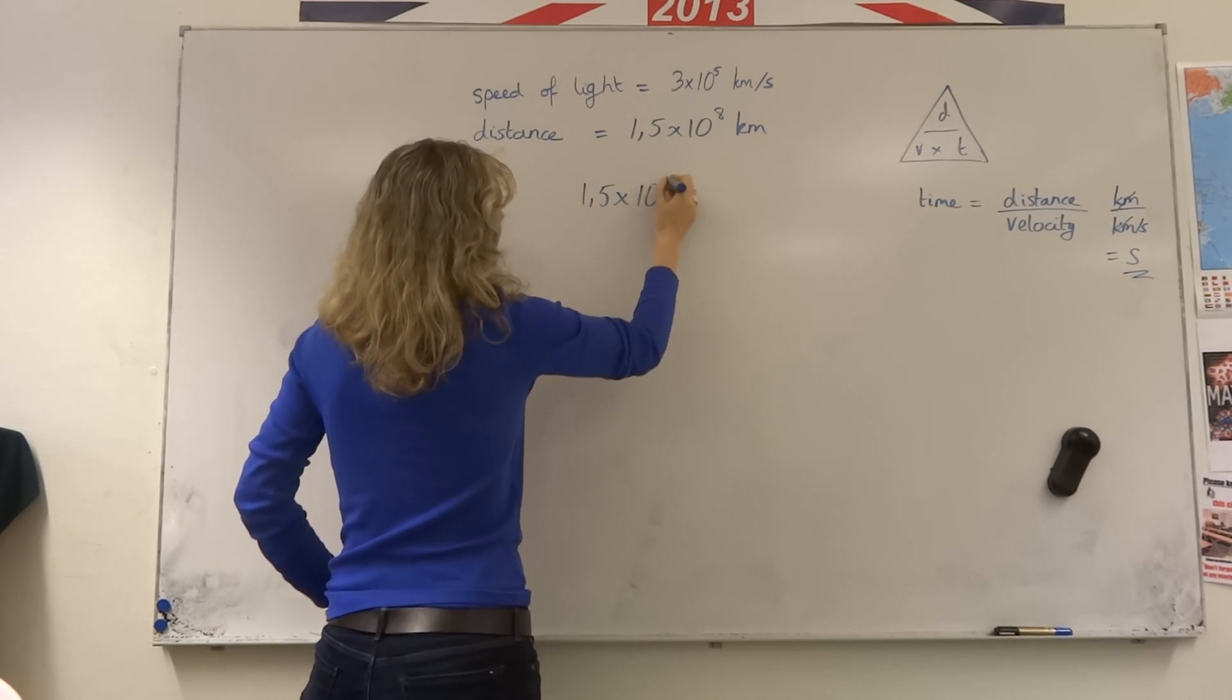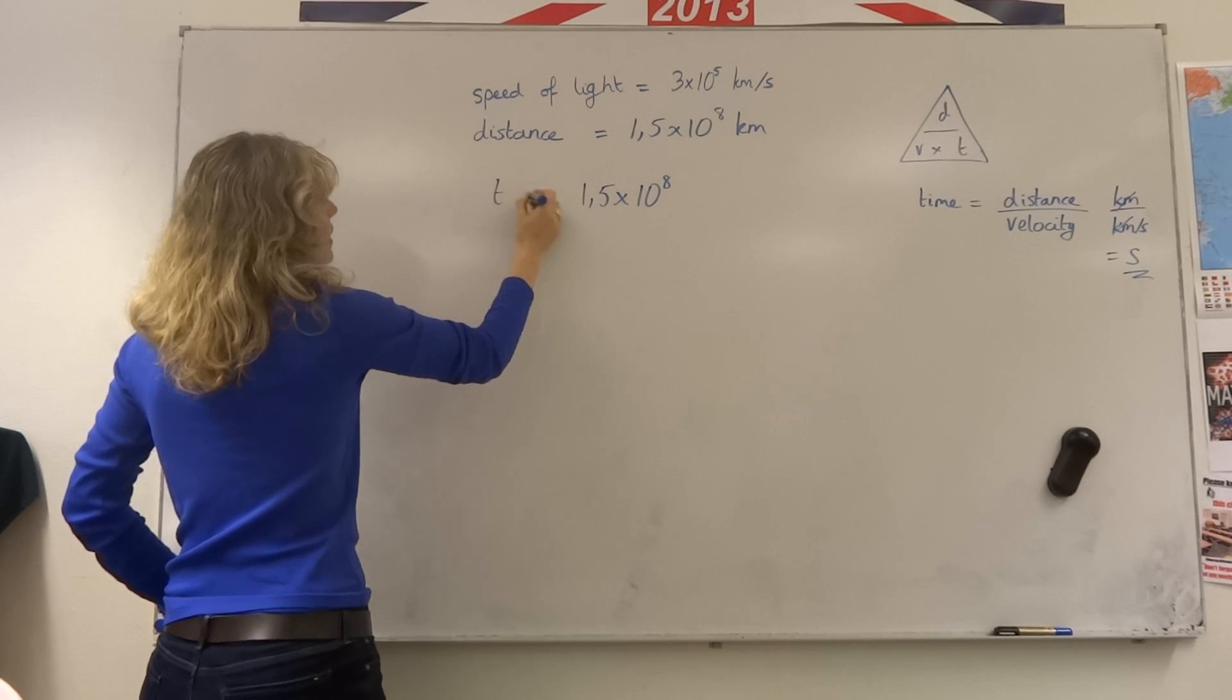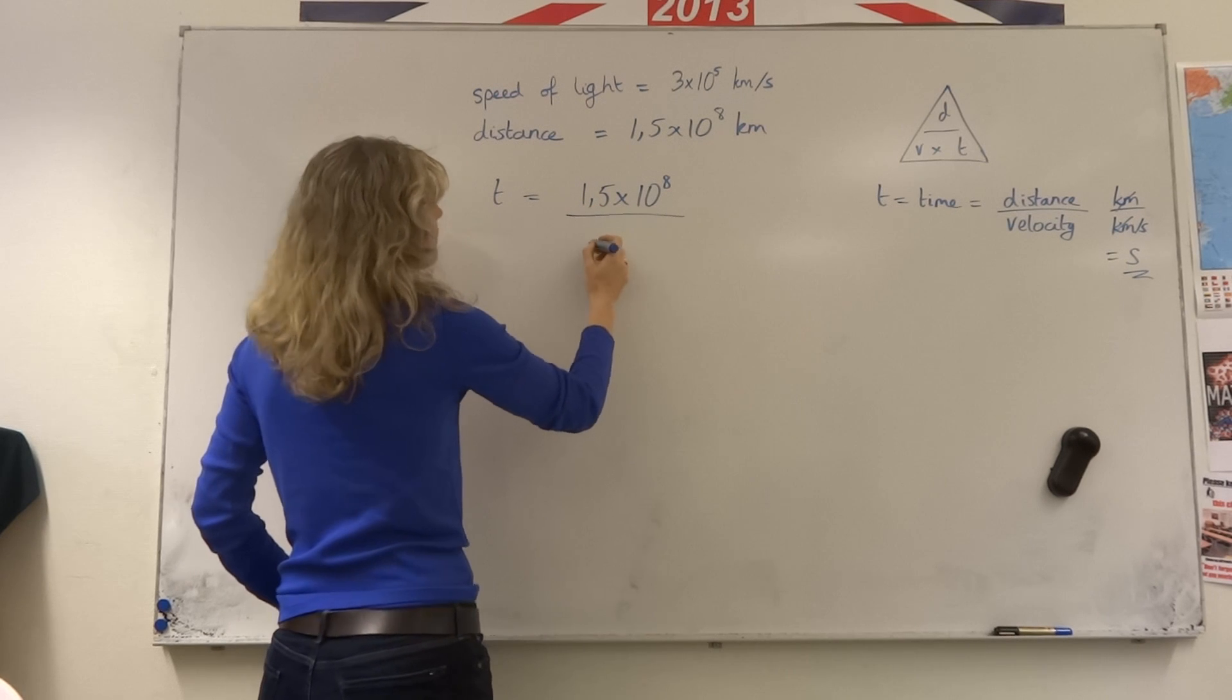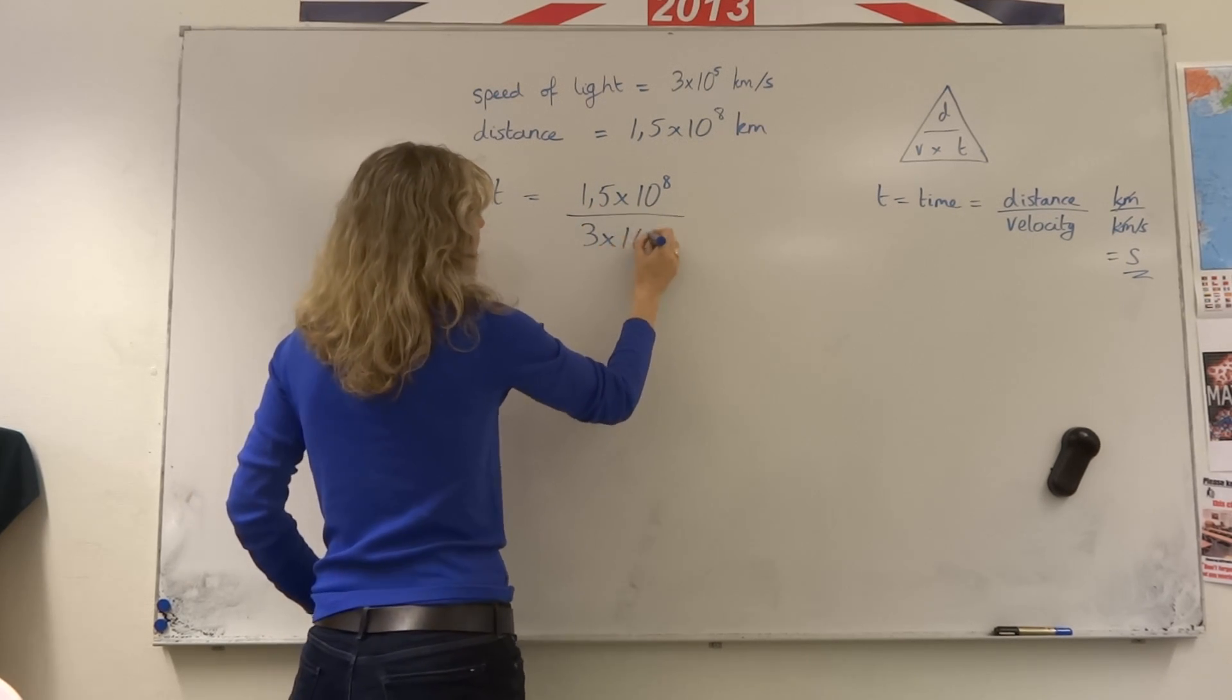So we have t is 1.5 times 10 to the 8 divided by 3 times 10 to the power 5.